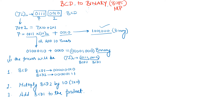We consider BCD2 (the higher nibble) and BCD1 (the lower nibble). We multiply BCD2 by 10 — or equivalently add it 10 times — then add BCD1 to that product to get the final output. Since the 8085 register size is 8 bits, BCD1 and BCD2 are both stored in 8 bits with the upper 4 bits as zero.